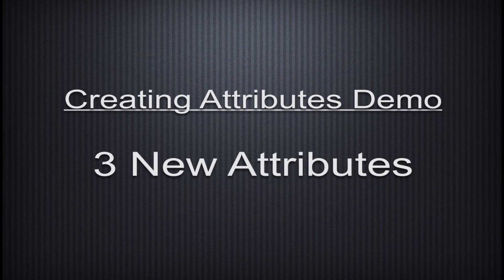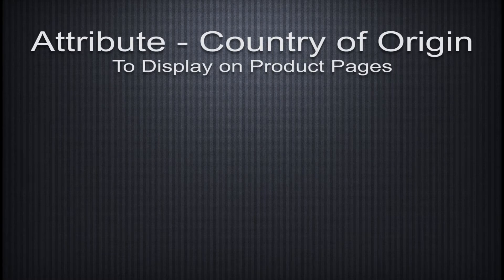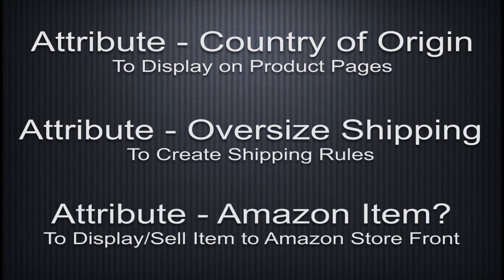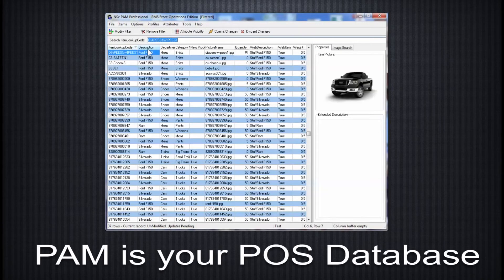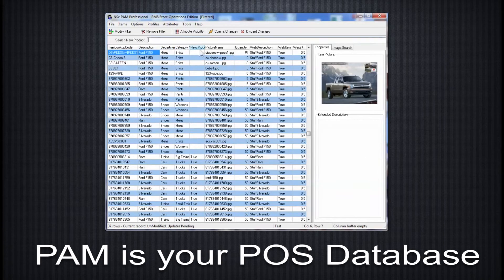For this demonstration, we'll create three new attributes. One, to display the country of origin on a product page. Two, to trigger variable oversized shipping fees for items. Three, to indicate which items are for sale on Amazon Storefront. Before beginning, it's important to remember that the Product Attribute Manager, or PAM, is an additional interface onto your database.